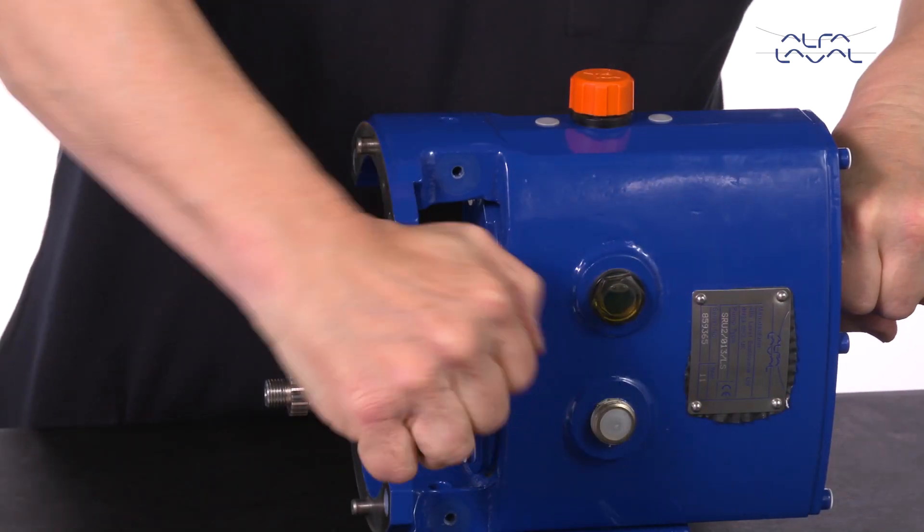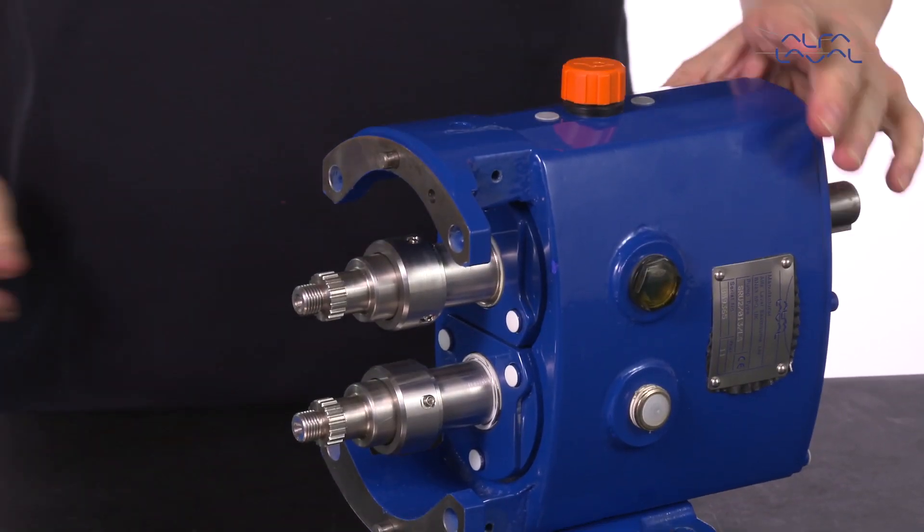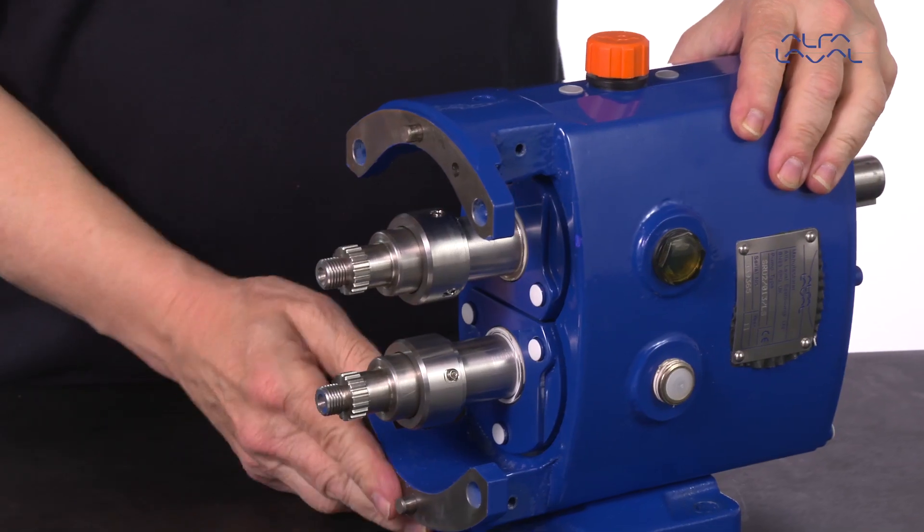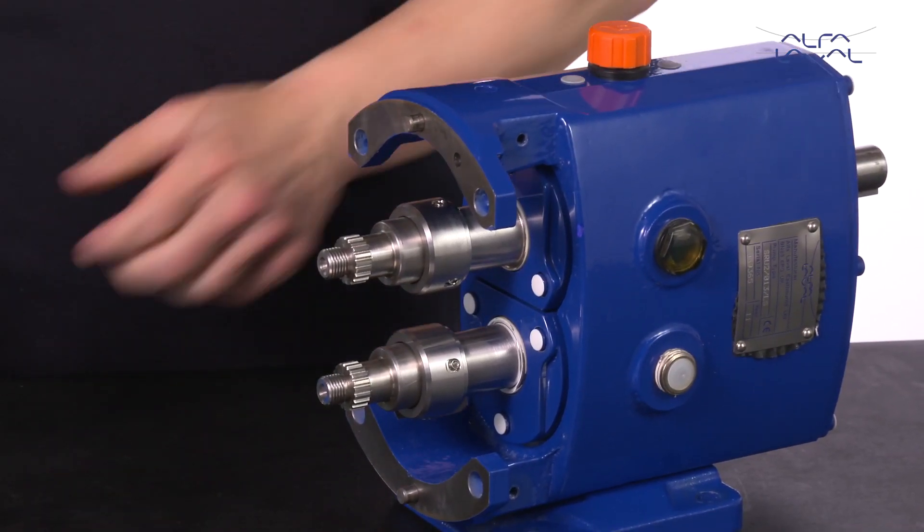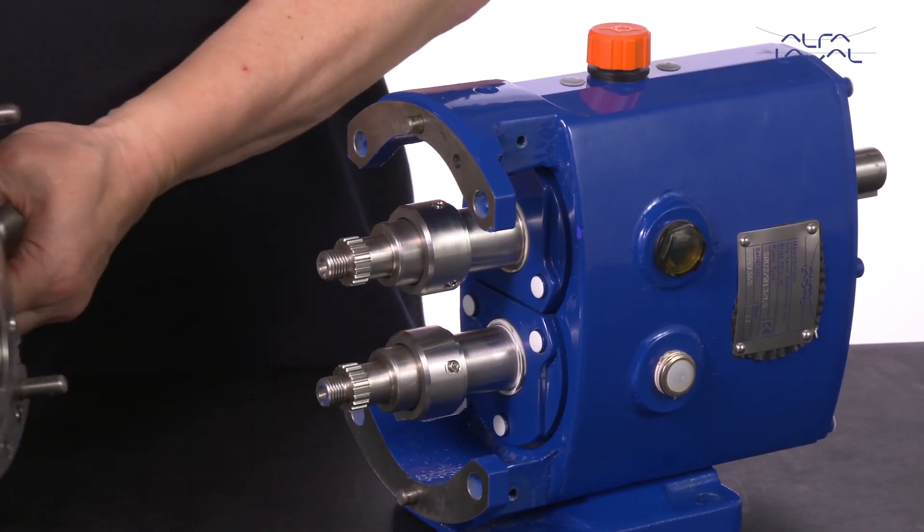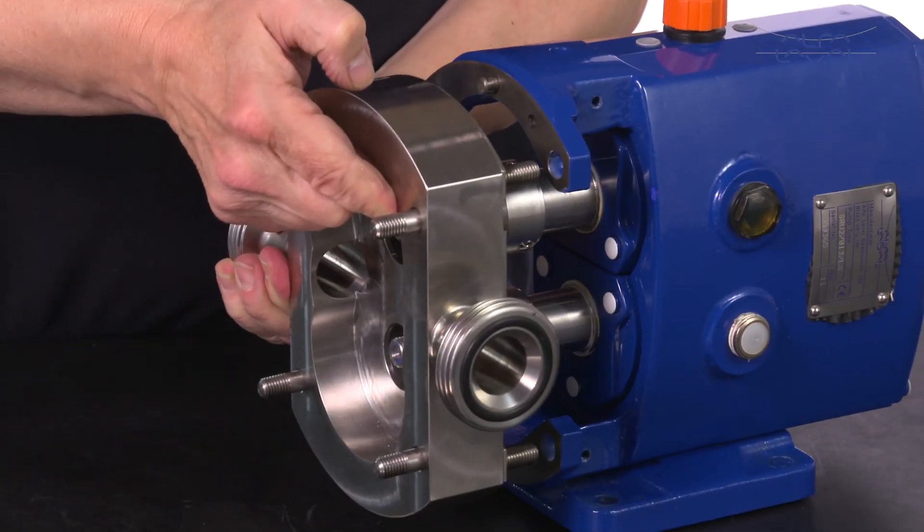Tighten the grub screws to the recommended torque as shown in the instruction manual. Refit the rotor case, rotors and rotor retention nut.